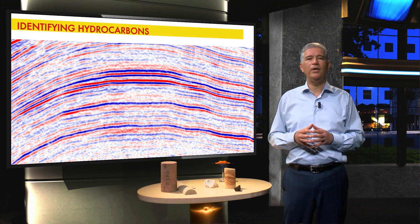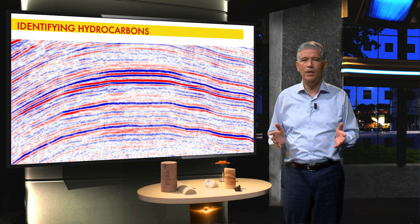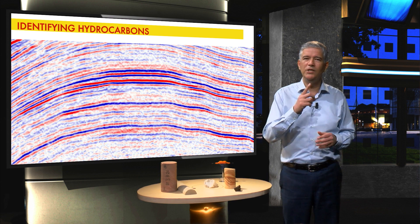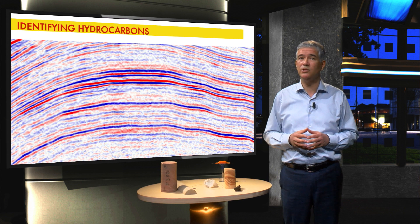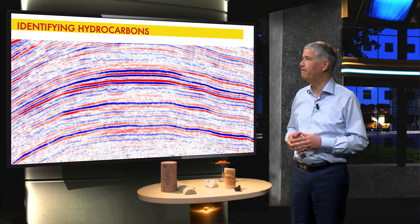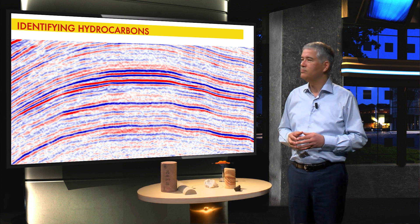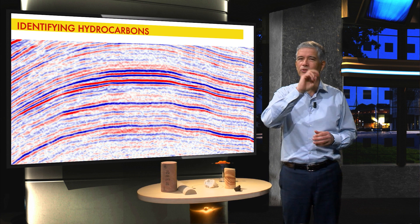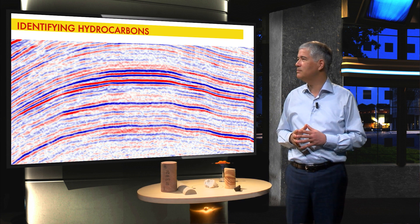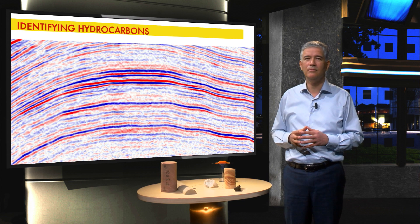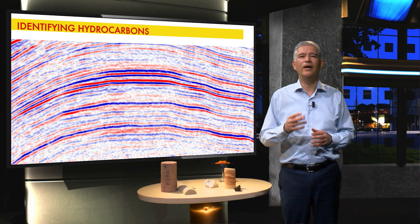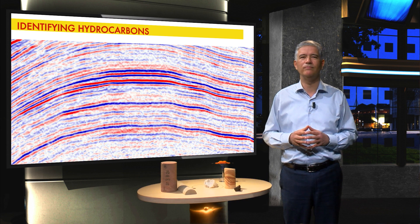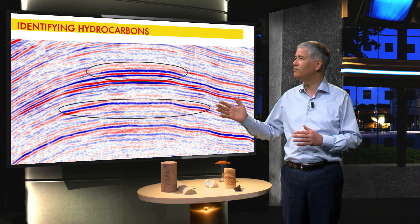Now we know the theory, let's practice. Have a close look at this seismic line — can you see indications of hydrocarbons? There are two intervals. These are the two intervals that contain the hydrocarbons: the first interval and the second interval.